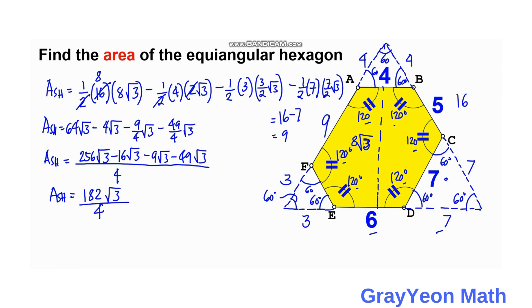Simplifying 182/4, we get 2 and 91, so the area of the shaded hexagon equals 91/2 × √3 square units. That is our answer.